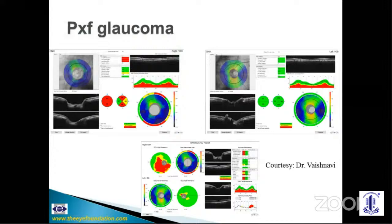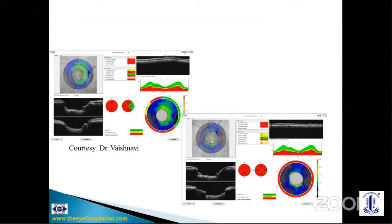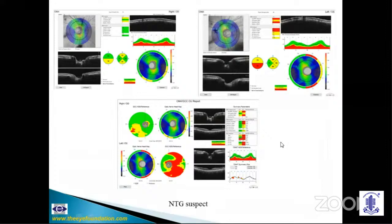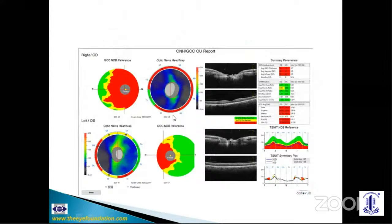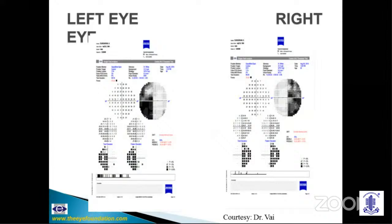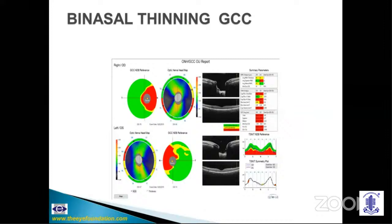In a case with a junctional scotoma showing central scotoma in one eye and a hemifield effect in the other, there was advanced GCC loss in a patient with non-glaucomatous visual field loss. This patient had a pituitary macroadenoma with complete loss of ganglion cells in the area of central scotoma. The RNFL thickness was normal but the GCC showed nasal thinning corresponding to the bitemporal hemianopia. Importantly, if you look at the tomogram here, the fovea has not been imaged — so again, always verify that the scan is properly obtained before interpreting. Thank you so much.